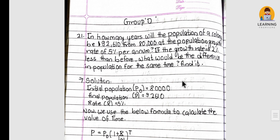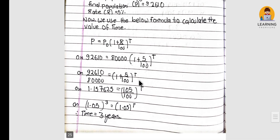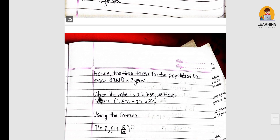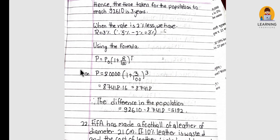In how many years will the population of a colony grow to 92,610 from 80,000 at a population growth rate of 5%? The time is 3 years. If the growth rate is 2% less (i.e., 3%), what will be the difference in population for the same time? At 3%, the new population is 87,418, so the difference is 5,192.